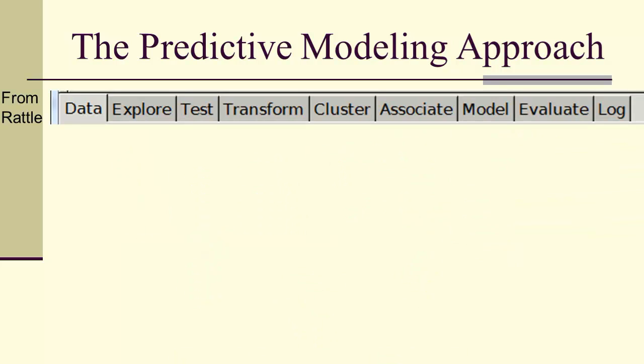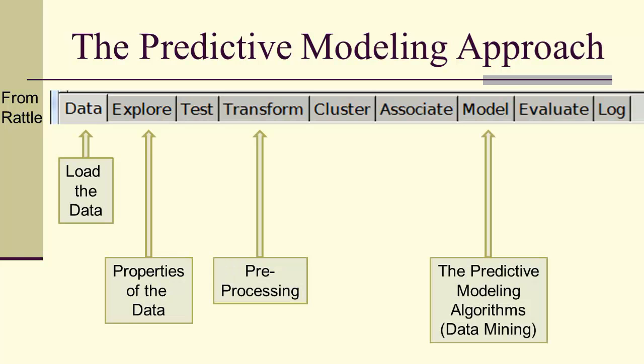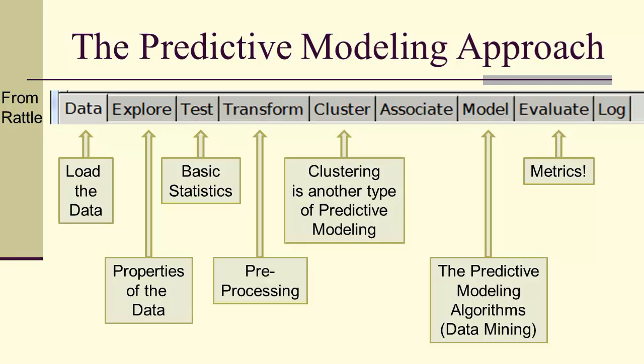Here's the actual tab bar from Rattle, and it has this same idea. We load the data, we explore it, we transform it, which is the preprocessing. We have algorithms, which are the models, and then we evaluate it using the metrics. There are some other tabs here also. The test is basic statistics, and clustering is another type of predictive modeling.